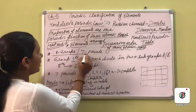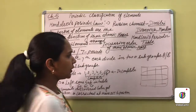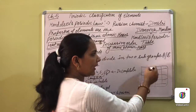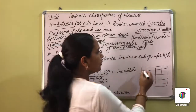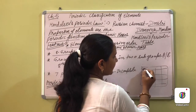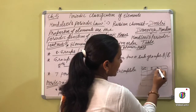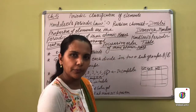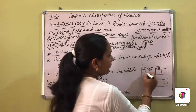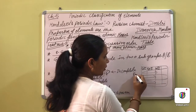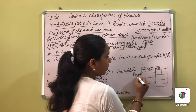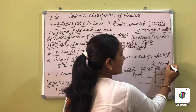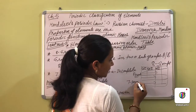The complete table was divided into eight groups. The vertical columns in the table were called groups - group 1, group 2, group 3, and so on, symbolized as GR. The horizontal rows were called periods. In total, there were eight groups and seven periods.